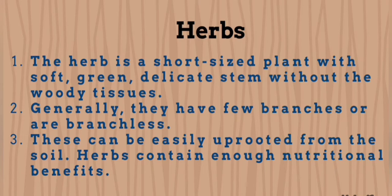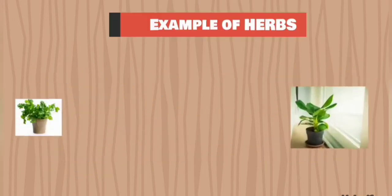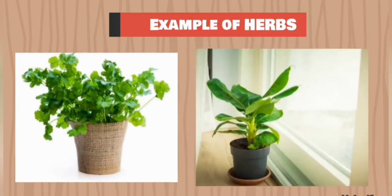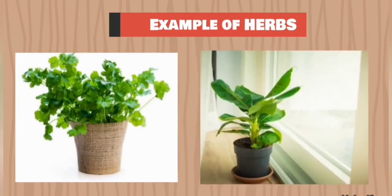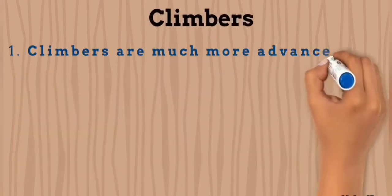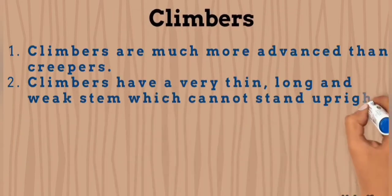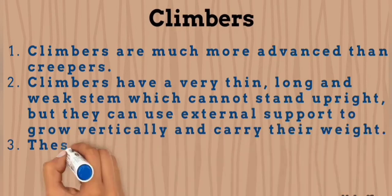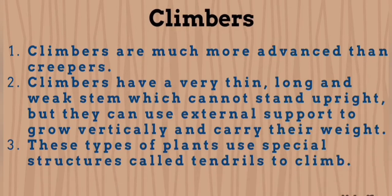Herbs are easily uprooted from the soil and they contain enough nutrition. Some examples of herbs are the coriander plant and the banana plant. Do you believe banana is a herb? Yes, it's a herb!